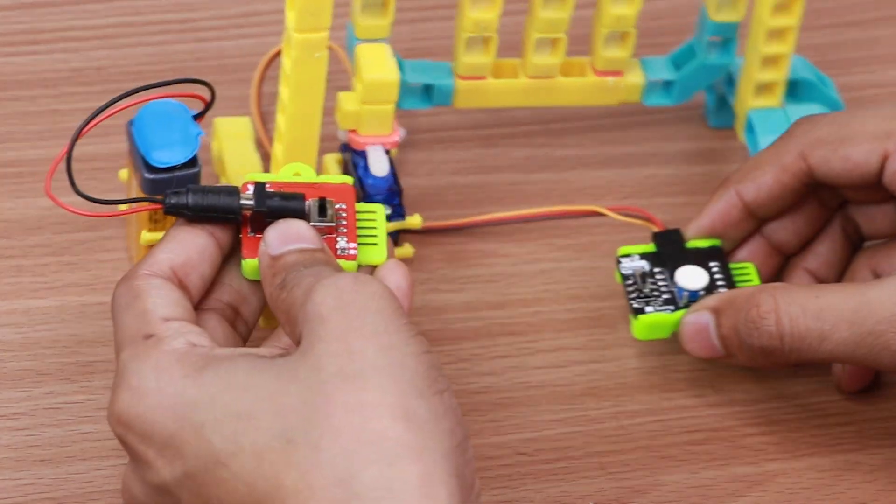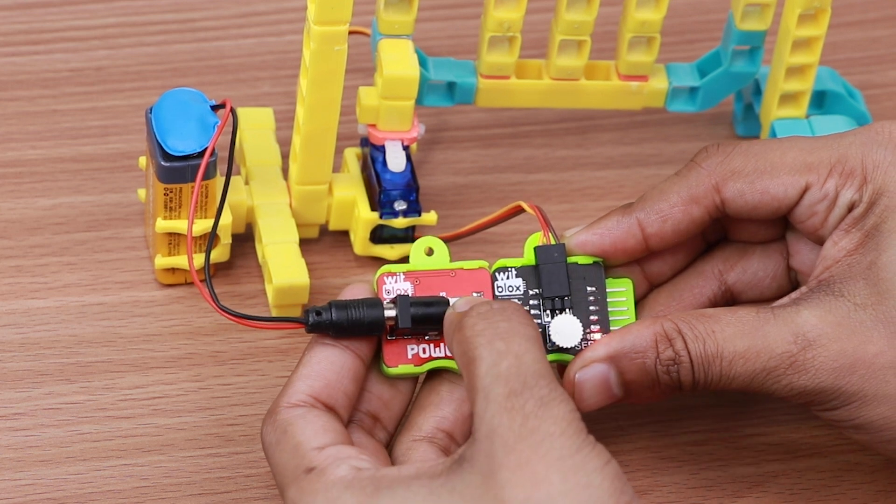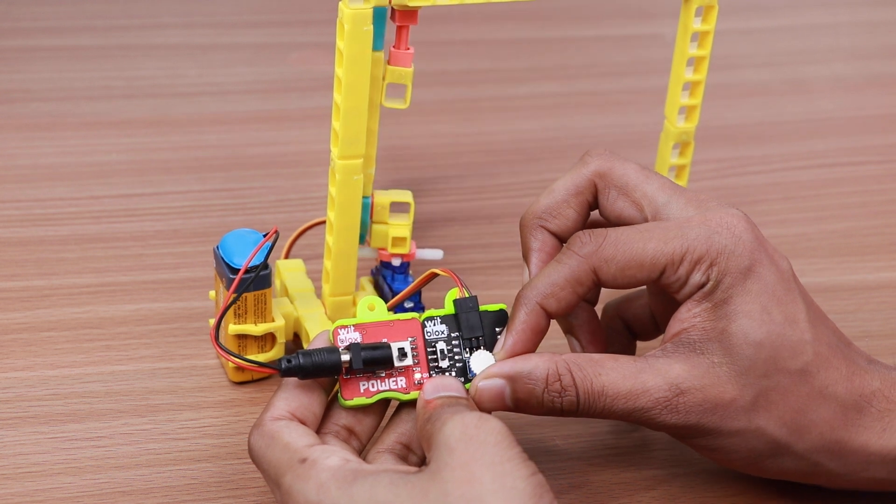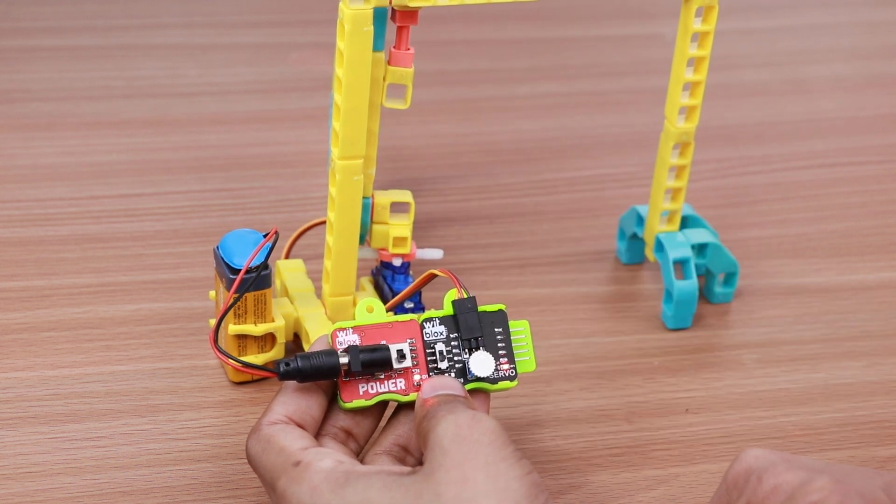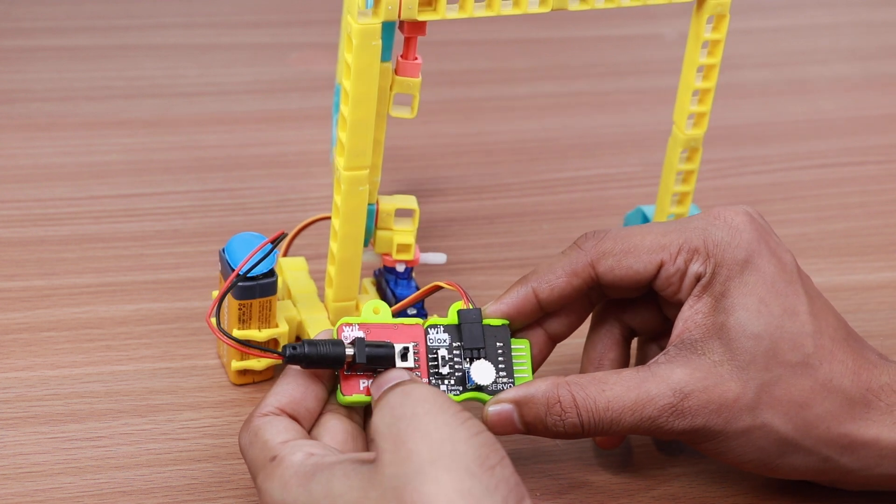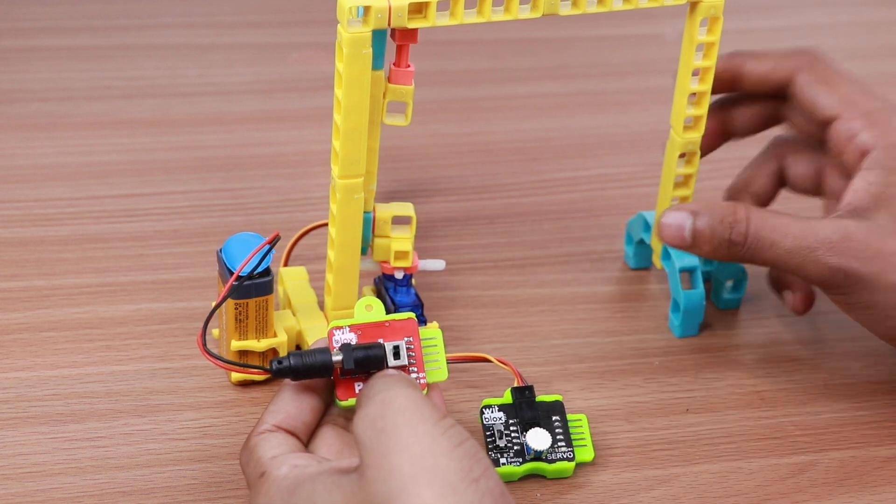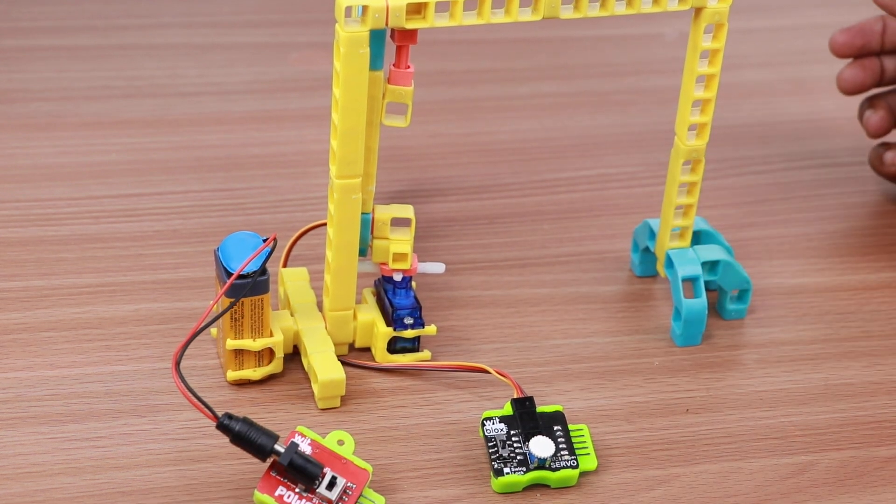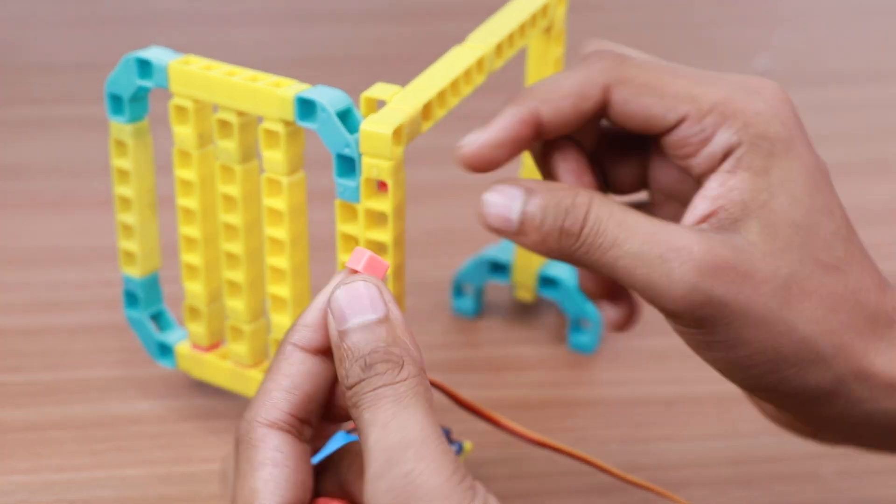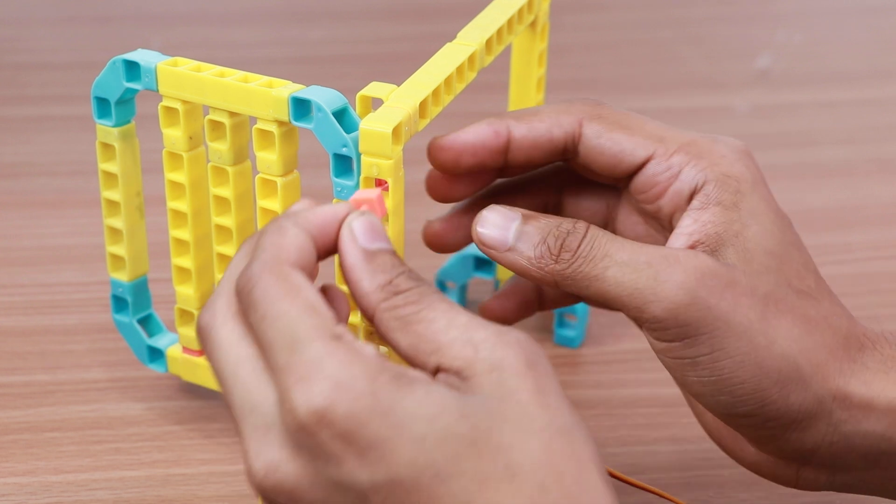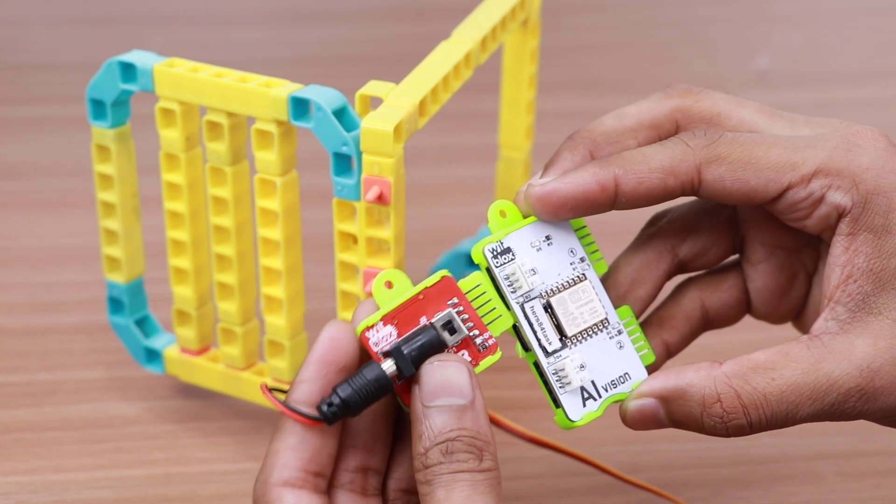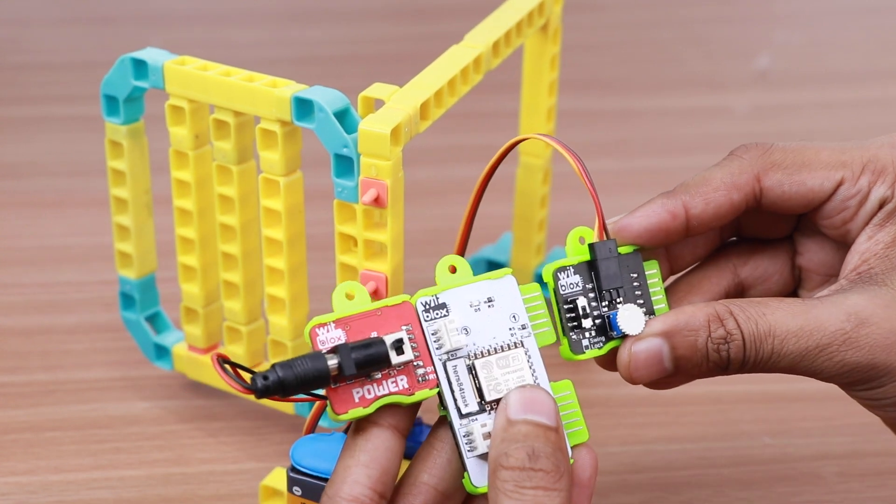Let's assemble the logic. Connect the power blocks to the servo blocks and test out the movement of the gate via the servo. Attach two blocks holders to the gate. Now create the logic by joining the power blocks, the AI vision blocks and the servo blocks.